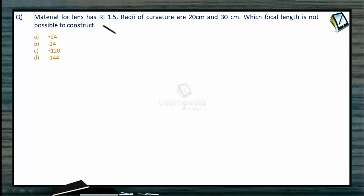Material for lens has refractive index 1.5 and radii of curvature are 20 cm and 30 cm. Which focal length is not possible to construct?